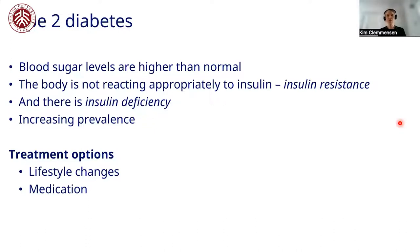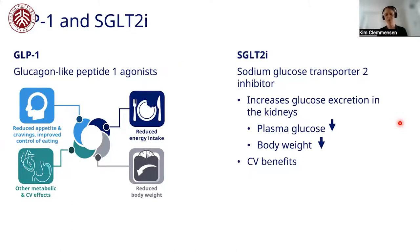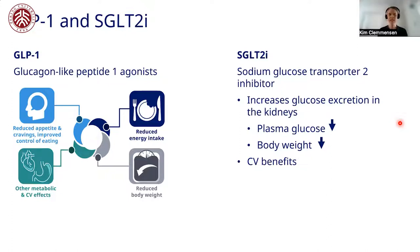The GLP-1, which stands for glucagon-like peptide-1 agonist, is a hormone we excrete in our guts as part of everyday living. Taking GLP-1 agonists leads to reduced appetite and craving for food and improved control of eating, which leads to reduced energy intake and reduced body weight. This drug has very nice effects on the metabolic system and also cardiovascular benefits.